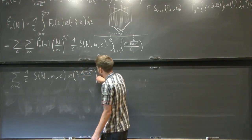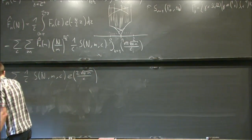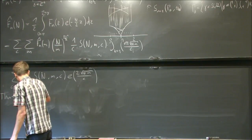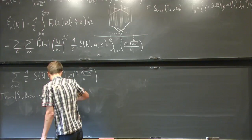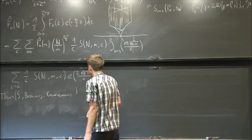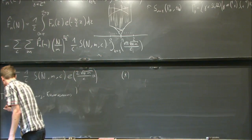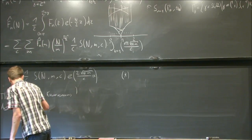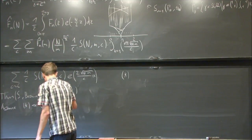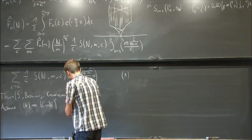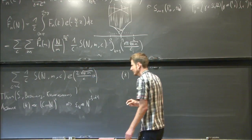Plugging everything back, you essentially reduce the problem to sums where c is of size C, weighted by 1/c times a Kloosterman sum, with an exponential factor coming from the tail of the Bessel function. Our theorem — by myself, Browning, and Kumaraswamy — states that if these sums are bounded by C·m·n^epsilon, then epsilon_n is indeed bounded by n to the minus 1/4 plus little-o of 1, so Sarnak's conjecture is true.